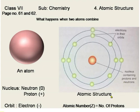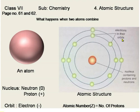Let us look at the internal structure of an atom. The central position of an atom is called the nucleus, and the nucleus is composed of protons and neutrons. Around this nucleus, many electrons revolve in their fixed paths called orbits.